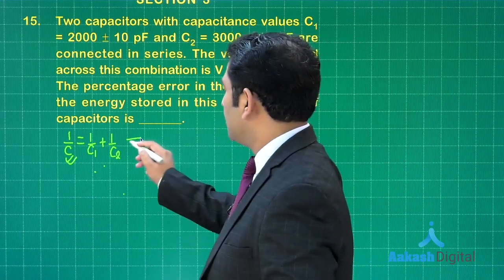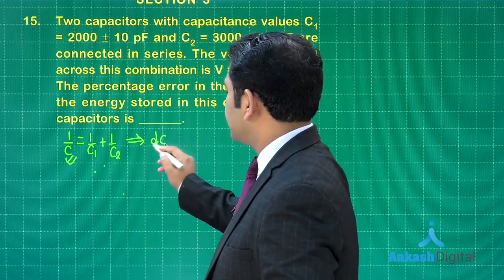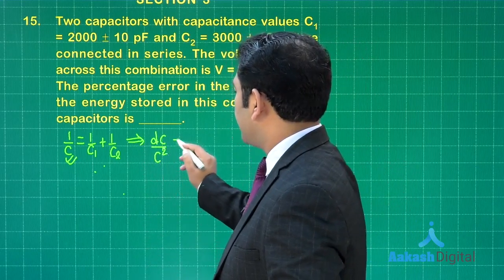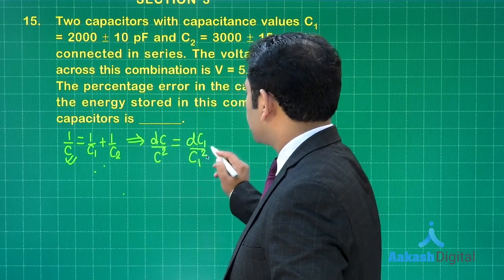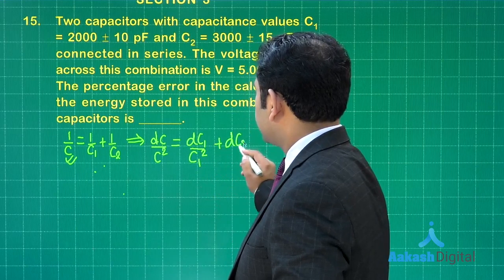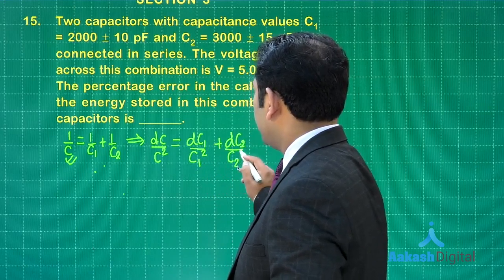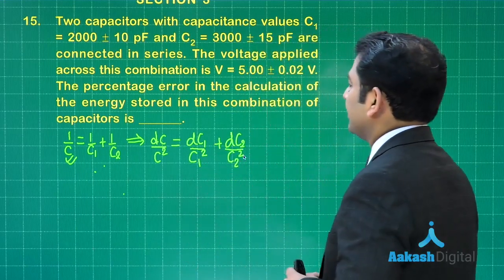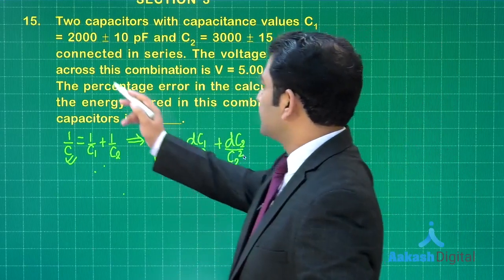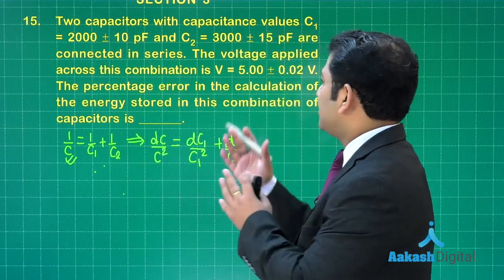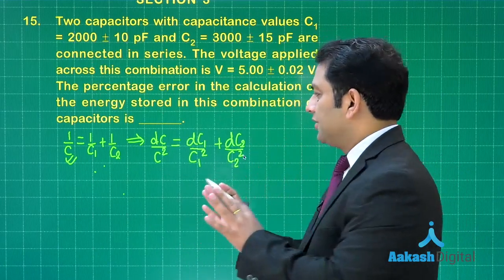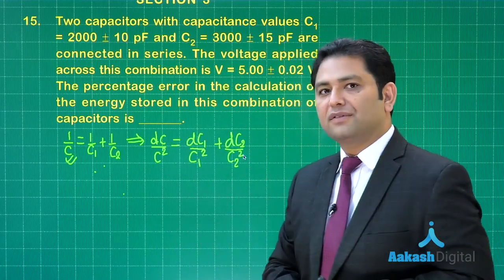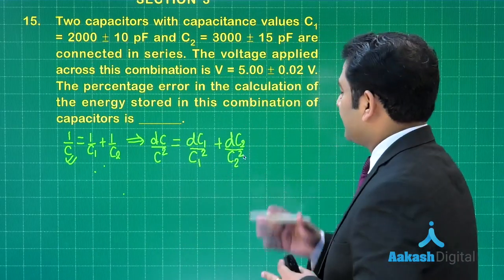Now after that, what I can do is that dC divided by C² will be dC1 by C1² plus dC2 by C2². And all those values are also given: C1 is 2000, dC1 is 10, C2 is 3000, dC2 is 15. That means now you can calculate the value of dC by C, and that is going to give us the fractional change in capacitance or the fractional error.